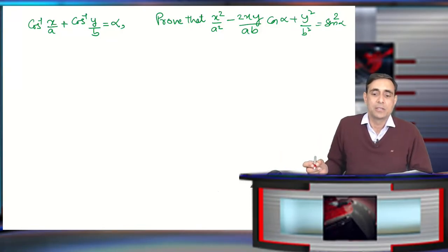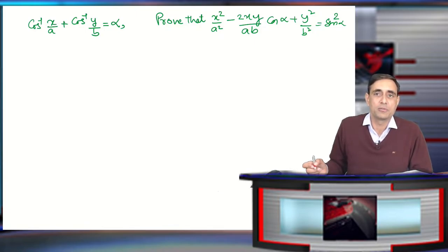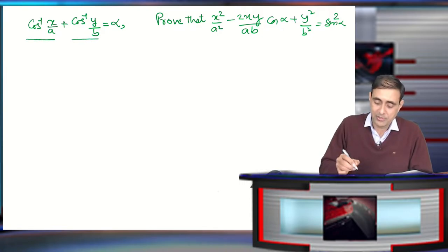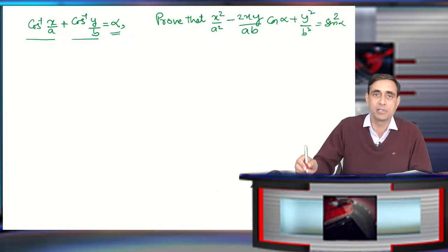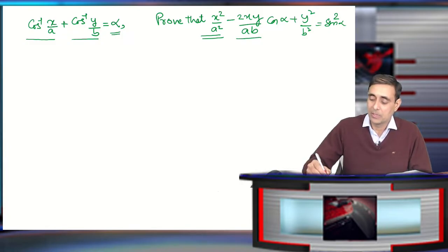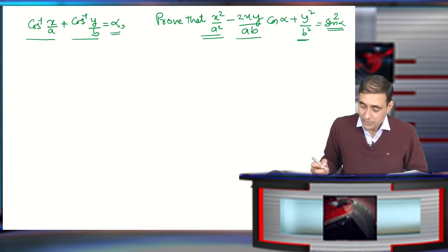Hello students, let us do one more important question from inverse trigonometry. The problem states: cos⁻¹(x/a) + cos⁻¹(y/b) = α is given, and we need to prove that x²/a² - 2xy/ab·cosα + y²/b² = sin²α. Let us look at this question.